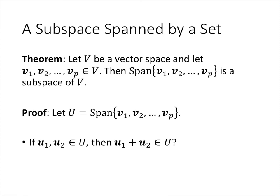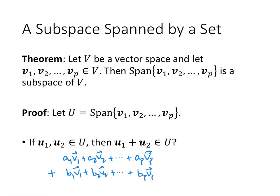Is U closed under addition? If we take two linear combinations — a1·v1 + a2·v2 + ... + ap·vp and b1·v1 + b2·v2 + ... + bp·vp — and add them together, we get (a1+b1)·v1 + (a2+b2)·v2 + ... + (ap+bp)·vp. That is also a linear combination of the v vectors, so it's in capital U.